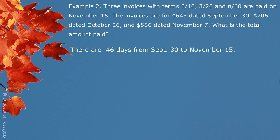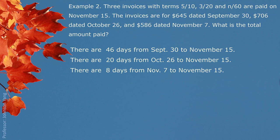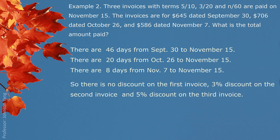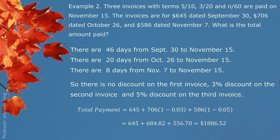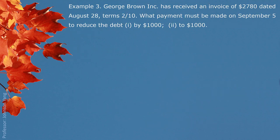Checking the days to November 15th: from September 30th is 46 days, from October 26th is 20 days, and from November 7th is 8 days. Therefore, the first invoice ($645) receives no discount, the second invoice ($706) receives a 3% discount, and the last invoice ($586) receives a 5% discount. After finishing the calculation, the total payment is $1,886.52.